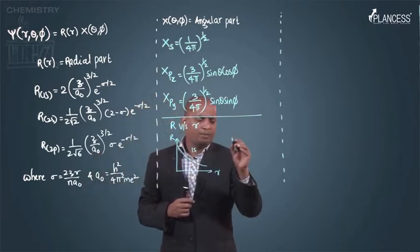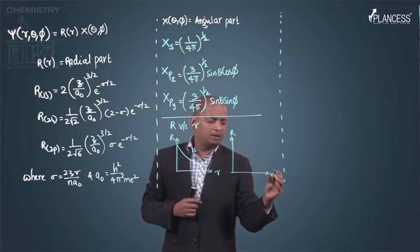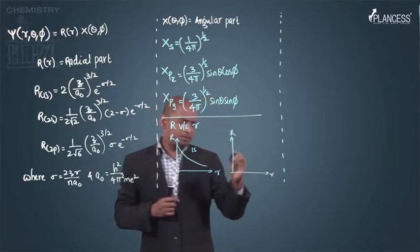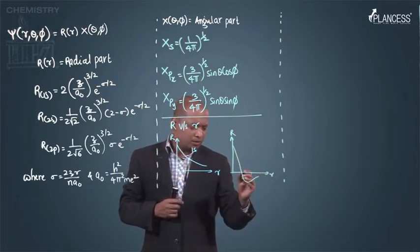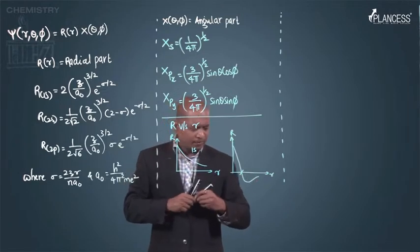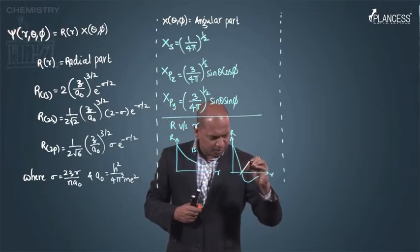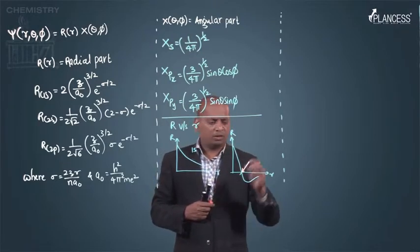Now, if we plot r versus r for 2s, we have a graph like this way. This point is called as a node.